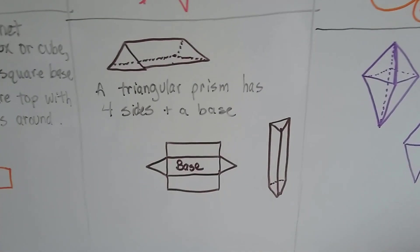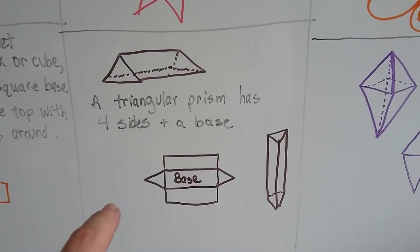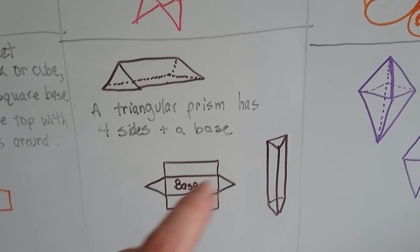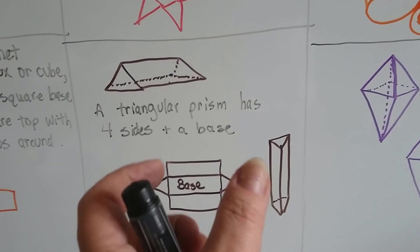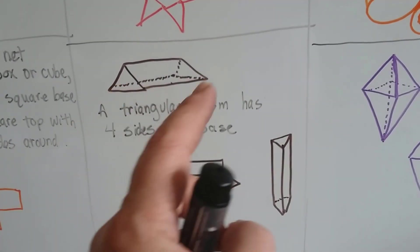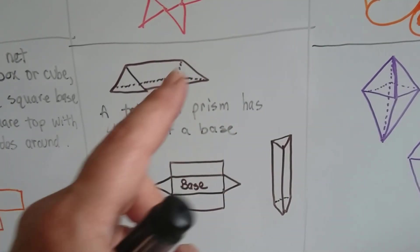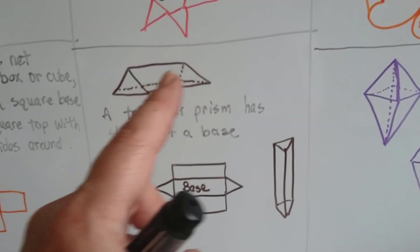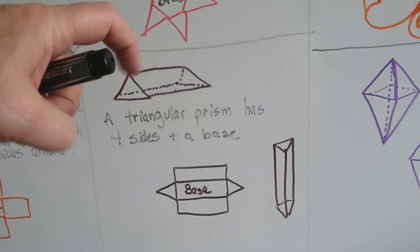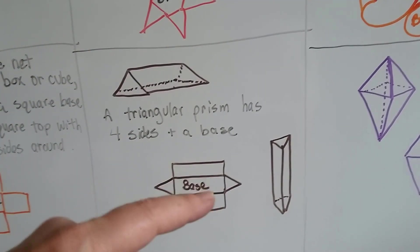A triangular prism has four sides and a base. One, two, three, four. You can see the ends can fold up to make these triangles on the sides. And then it's got a big rectangle on this side and a rectangle on the back side. So if you unfolded it, it would look like this.